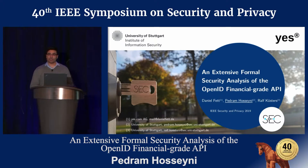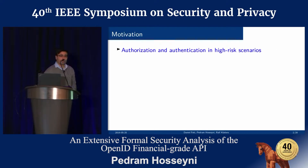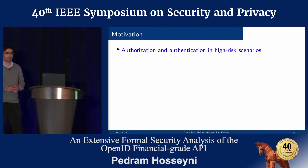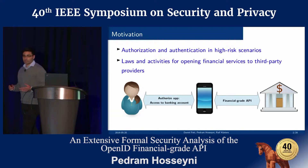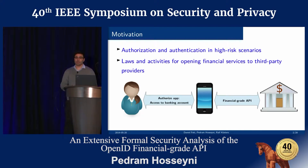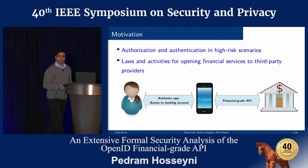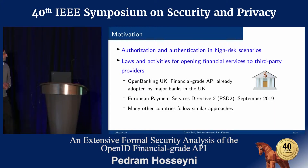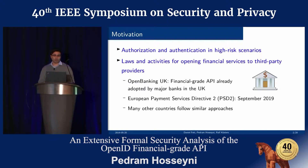The Financial Grade API is an authorization and authentication scheme for high-risk environments, for example financial applications. Currently there are many activities to open, especially financial services to third-party providers. The Financial Grade API is already adopted by major banks in the UK and is one of the most promising candidates for implementing the new European Payment Services Directive, which requires by law that financial institutions offer open banking APIs for third-party providers.